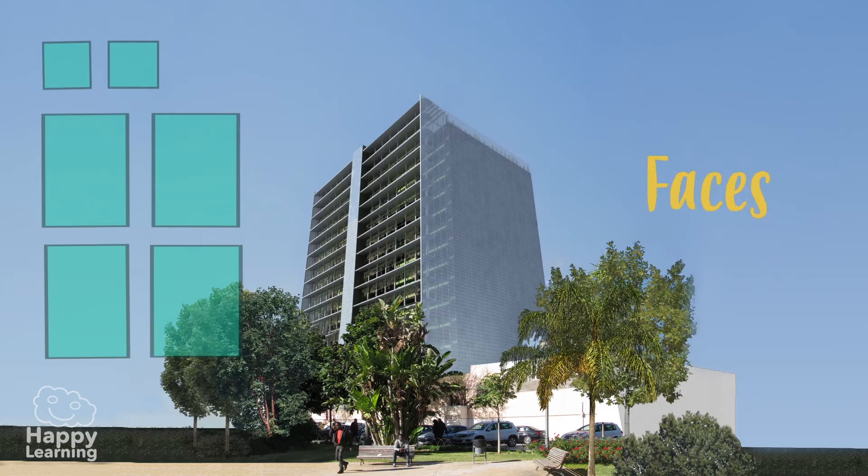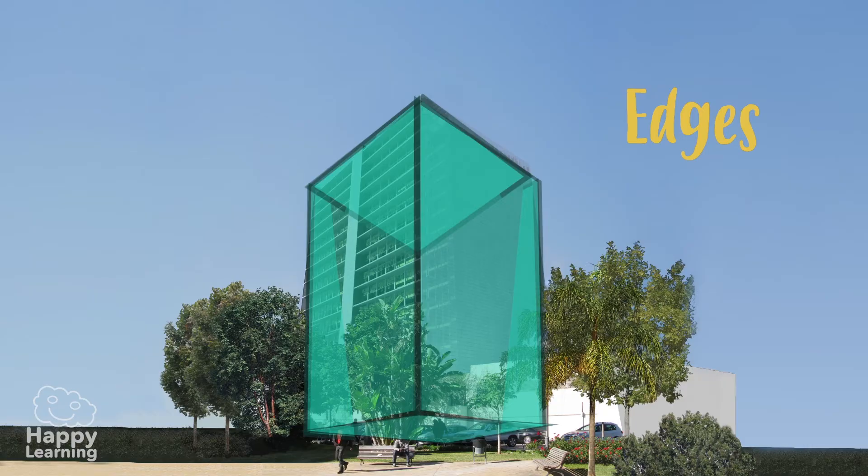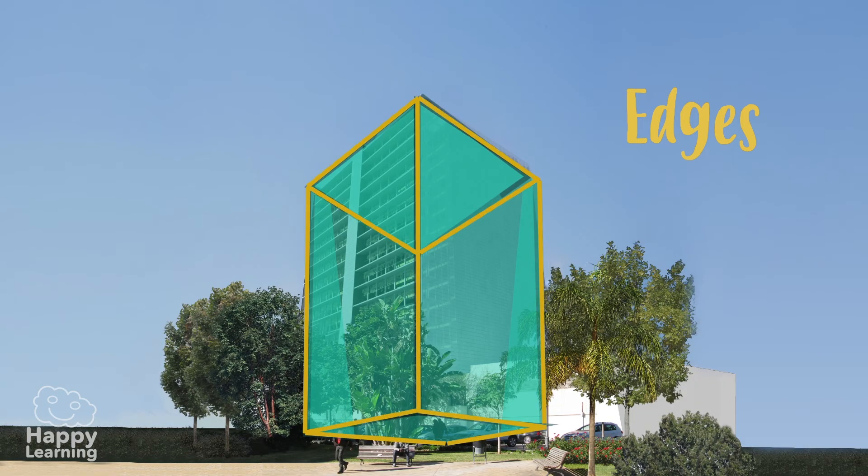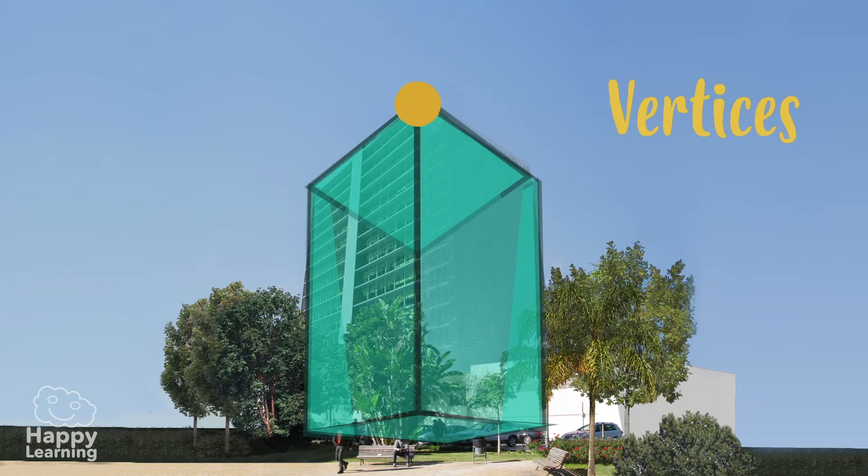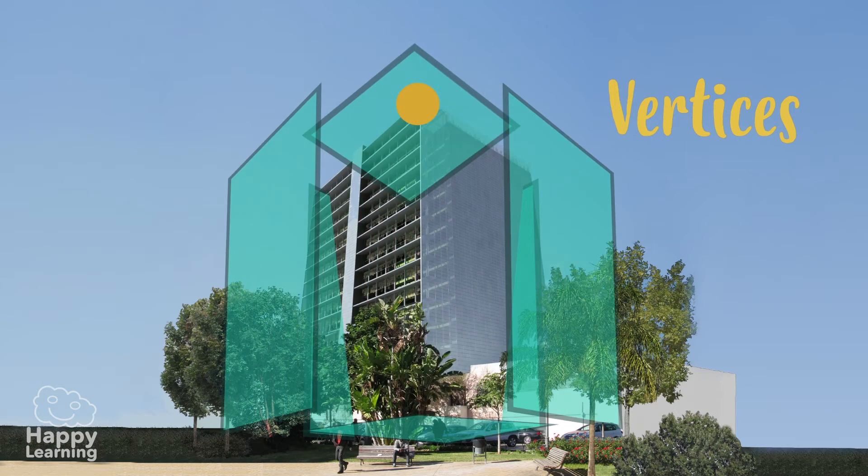Well, faces are the polygons that make up the polyhedron. The edges are the sides of the faces, and the vertices are the points where three or more faces meet.